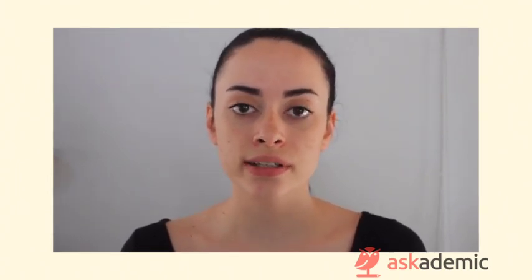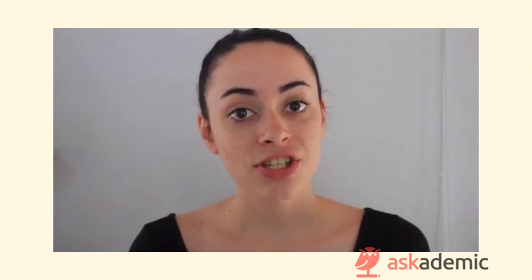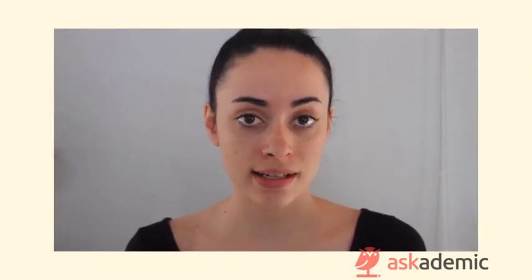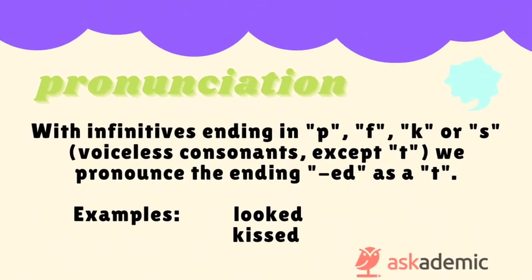The pronunciation for the suffix "-ed" is different depending on what letter comes before that suffix. In general, the e is silent. With infinitives ending in p, f, k, or s — voiceless consonants, except for t — we pronounce the ending "-ed" as /t/, as in looked and kissed.